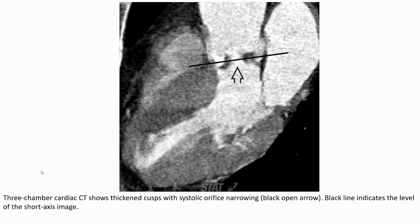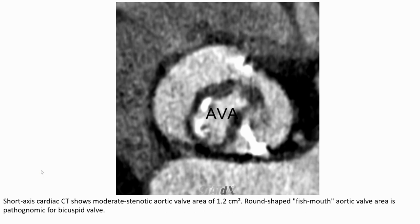The three-chamber cardiac CT shows a stenotic aortic valve with systolic orifice narrowing; the black line indicates the level of the short-axis image. On the short-axis cardiac CT, a moderate stenotic aortic valve area of 1.2 cm² is seen, with a round shape. A three-chamber aortic valve area appearance is pathognomonic for a bicuspid valve.